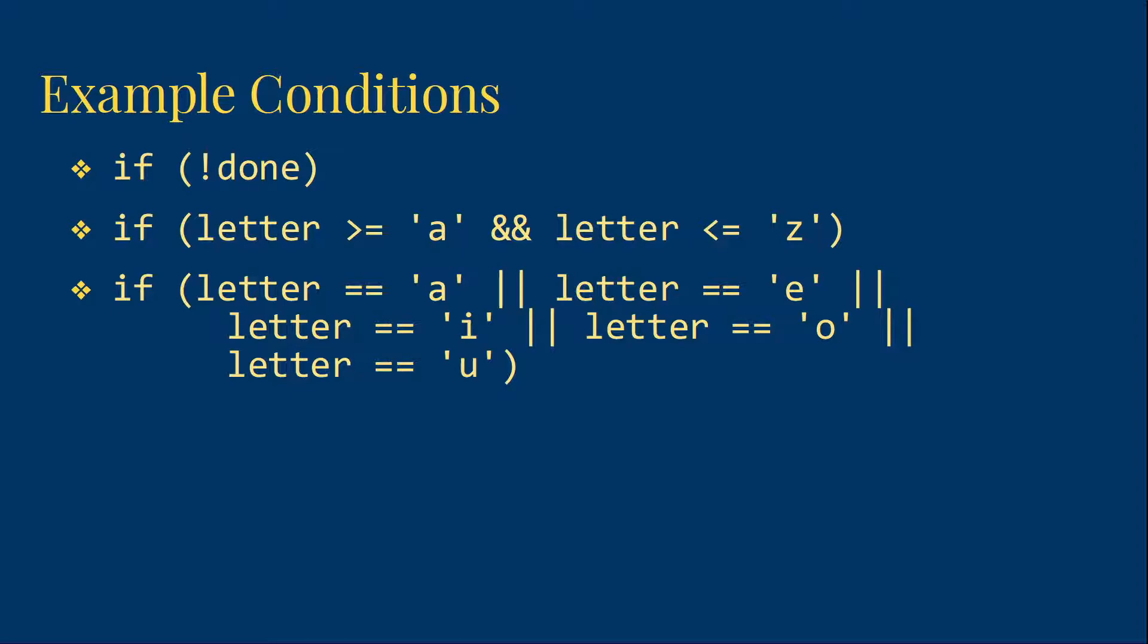If letter is greater than or equal to lowercase a, AND letter is less than or equal to lowercase z. So this is basically checking is the letter in the range of the lowercase letters. Note, we would get tempted to write this the way we would write it in English, which might be a is less than or equal to letter is less than or equal to z. We cannot do that in Java. In Java, you have to have the two separate conditions and the AND to express this concept.